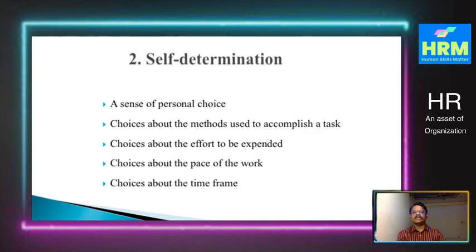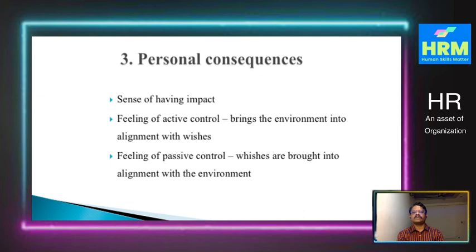The second dimension is self-determination — a sense of personal choice. This includes choice about the methods used in accomplishing tasks, choice about the effort to be expended, choice about the pace of work, and choice about the time frame. Employees have the complete freedom to decide the time, the space, and the work on their own as far as empowerment is concerned. The third dimension is personal consequences — a sense of having impact. This involves a feeling of active control and bringing the environment into alignment with one's wishes, a feeling of positive control.